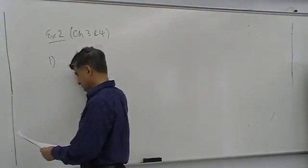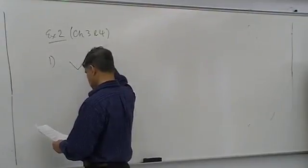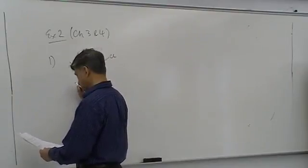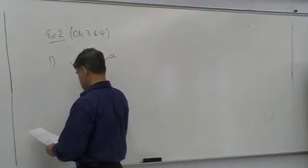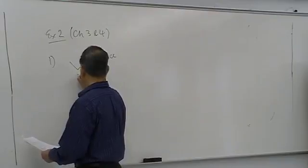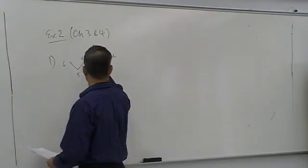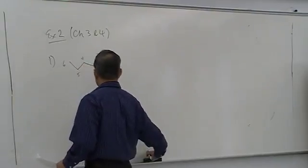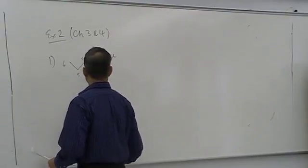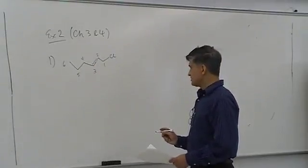Let me give you a compound. I have a six-carbon chain: 1, 2, 3, 4, 5, 6. Now let's have a double bond between 2 and 3. So there's a double bond between 2 and 3, and the rest are all single bonds.